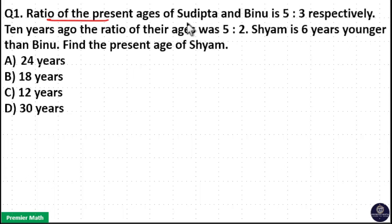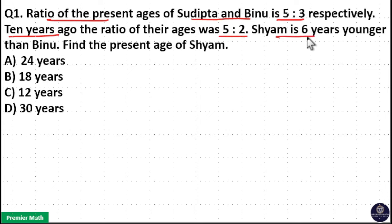Ratio of present ages of Sudheeta and Binu is 5:3. Ten years ago, the ratio of their ages was 5:2. Shyam is 6 years younger than Binu. Find the present age of Shyam.